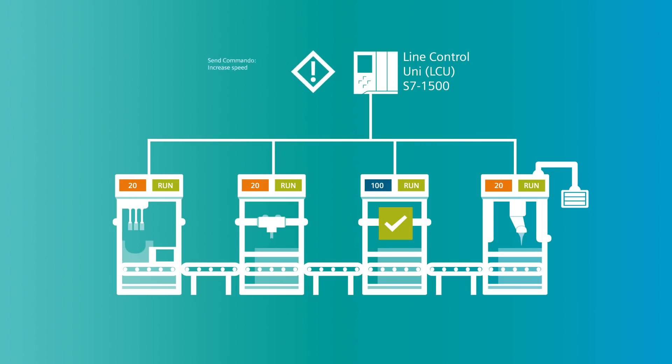The four strategies are: Line Speed Setpoint, Line Supervision, Buffer Control, and Bottleneck Machine. The Line Control Unit concept is also available for you to download from Siemens Industry Online Support.